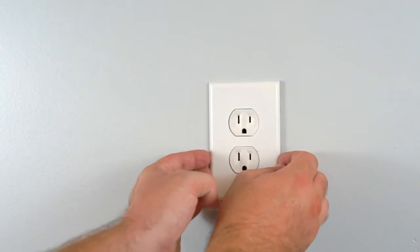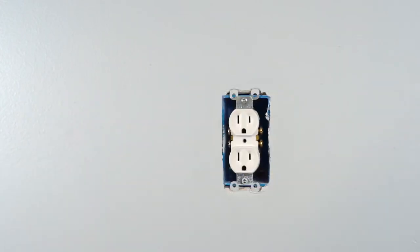To remove, firmly grasp the sides and slowly work away from the wall. That's how easy it is to install and remove push plates.